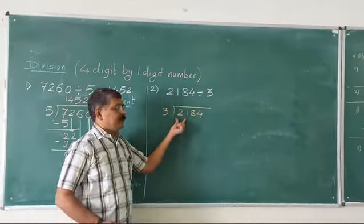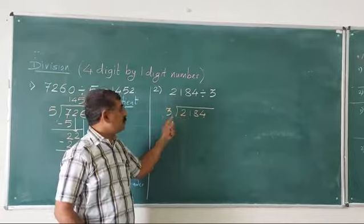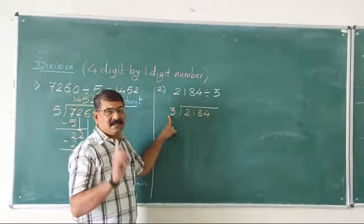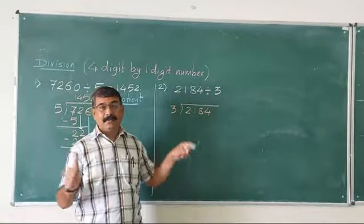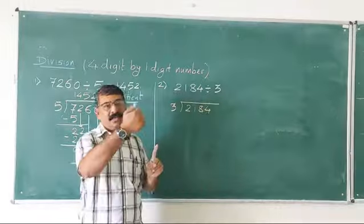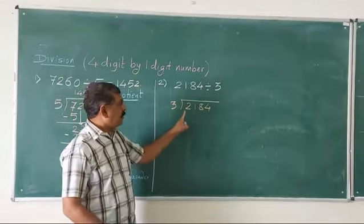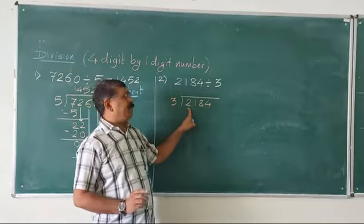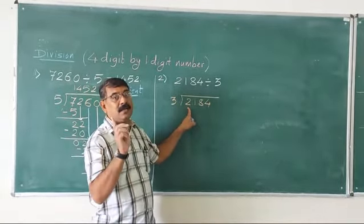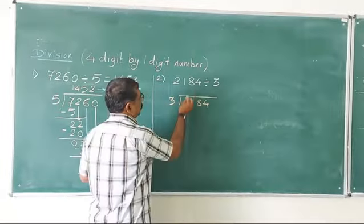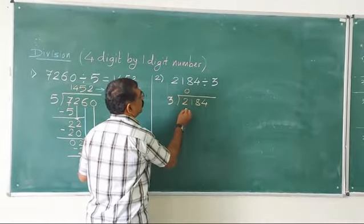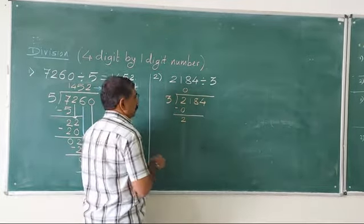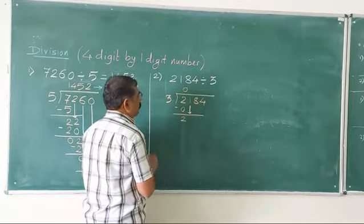Let us take the first digit. The first digit is 2, which is smaller than our divisor 3. We know the table of 3 — 3 ones are 3. But we cannot subtract 3 from 2, so we go one step back: 3 zeros are 0. We write quotient digit 0 and subtract — now take down the next digit, so it becomes 21.